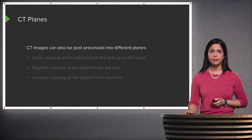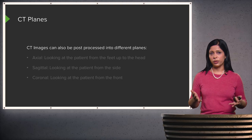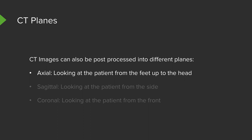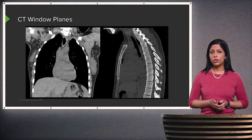CTs can also be evaluated in multiple planes. CT images are post-processed into different planes, which doesn't require reacquisition of images. The axial plane is most commonly used and looks at the patient from their feet up to their head. Sagittal images look at the patient from one side to the other, and coronal images — the third plane — look at the patient from front to back.